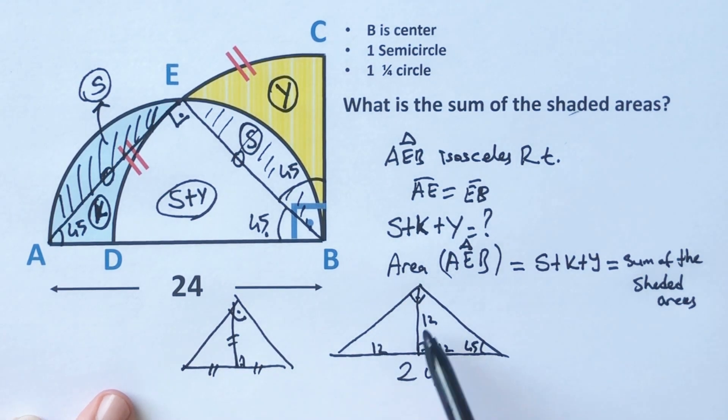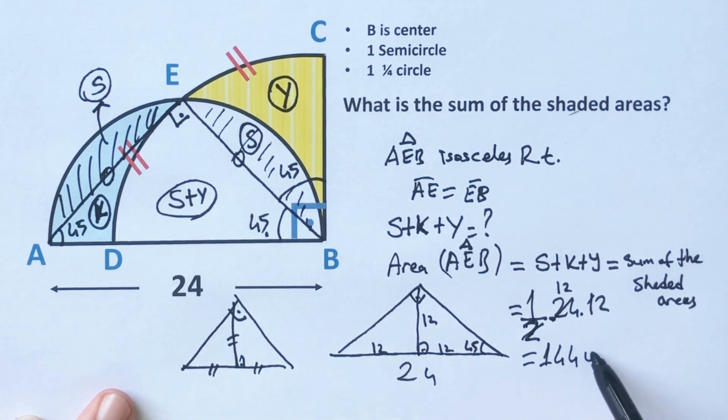Therefore the area equals half of the base, 24, times height. Let's simplify the expression. Therefore the area equals 144 unit square. Thanks for watching.